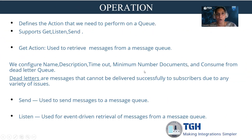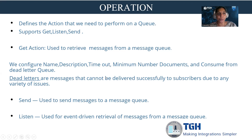Coming to the operation, it defines the action that we need to perform on the queue. Bhoomi Atom Queue supports three types of actions: Get, Listen, and Send. Get is used to retrieve messages from the message queue. Send is used to send messages to the message queue. And Listen is used for event-driven retrieval of messages from the queue.